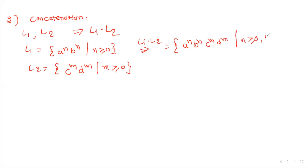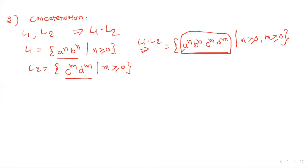After concatenation, we get A^N B^N C^M D^M where N, M ≥ 0. This is also context-free, because L1 contains equal number of A's and B's, and L2 contains equal number of C's and D's. After concatenation, it still contains equal A's and B's and equal C's and D's — so automatically this is a context-free language, accepted by pushdown automata.